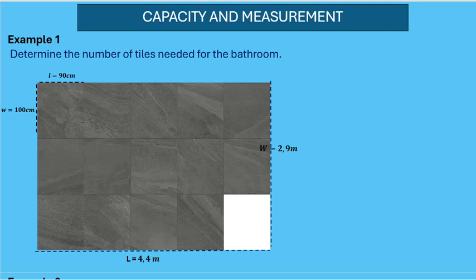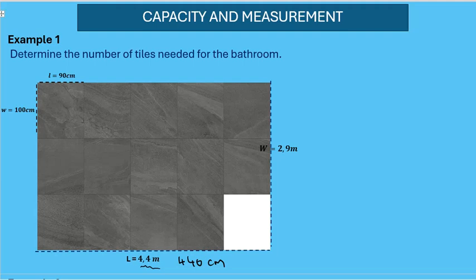I'm going to convert the meters to centimeters. Each meter has 100 centimeters, so to change 4.4 meters I multiply by 100: 4.4 times 100 gives 440 centimeters. We also need to change the width: 2.9 meters multiplied by 100 gives us 290 centimeters. Now that we have the bathroom dimensions in centimeters, we can proceed with the calculation.